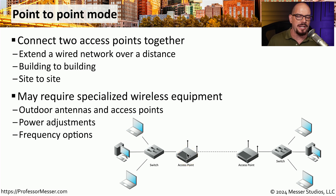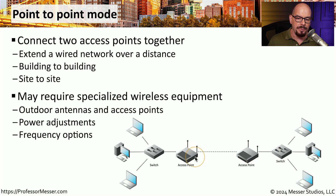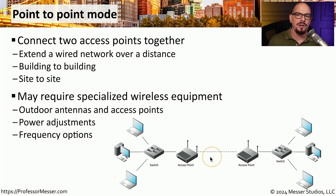You may, for example, require additional types of antennas to bridge the gap between the access points. There might also be a requirement to change the power output between these two devices and to make sure you're using frequencies that are able to communicate over that longer distance.